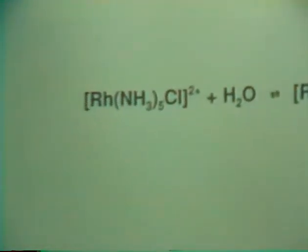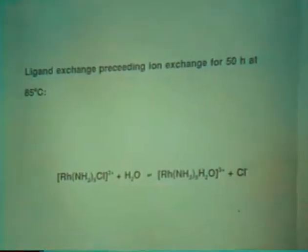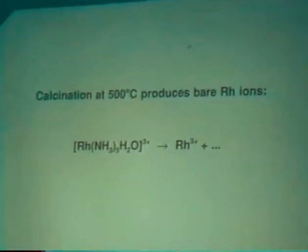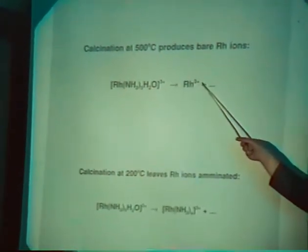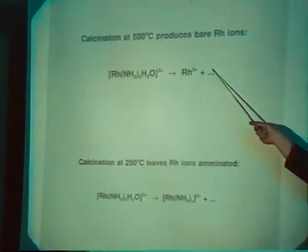We are quite confident that manganese is only present in our catalysts as the divalent Mn2+. The rhodium officially starts as a monochloropentaamine cation, but during the ion exchange, which takes about a day, there is complete ligand exchange. So what is in the zeolite is the monochloropentaamine complex — no chlorine ever enters our zeolite. The calcination procedure is of very important effect. You can calcine at high temperature, and then you get naked rhodium ions. When you reduce them with hydrogen, you get atoms plus protons.